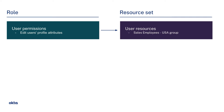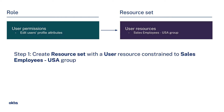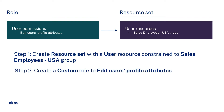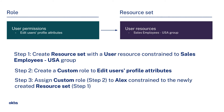Following the principles of least privilege, I will demonstrate how an Okta super admin can configure Alex with the required access in three steps. Step 1: Create a resource set with the user resource constrained to the group that contains all the sales employees based out of the United States. Step 2: Create a custom role to edit user profile attributes. Step 3: Assign the custom role created in Step 2 to Alex, constrained by the resource set created in Step 1.